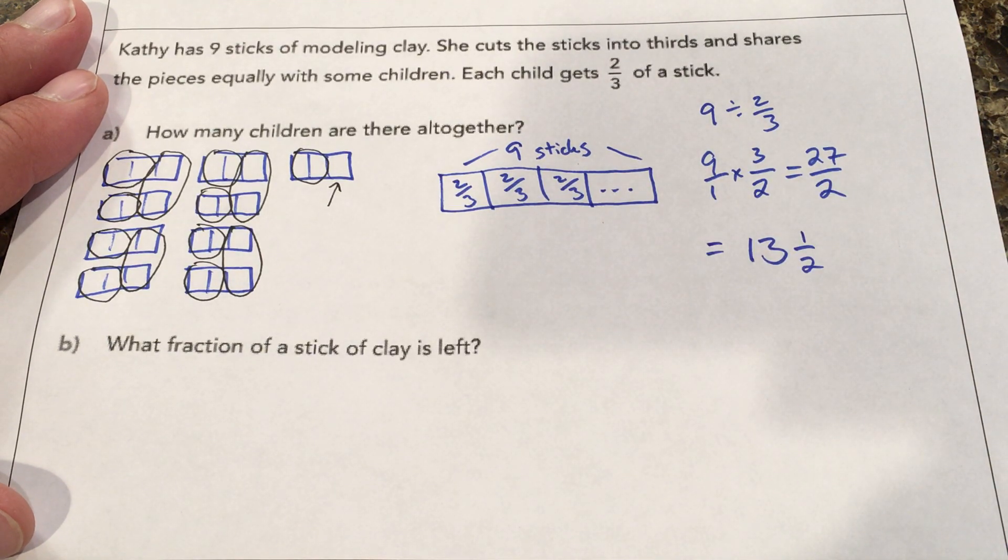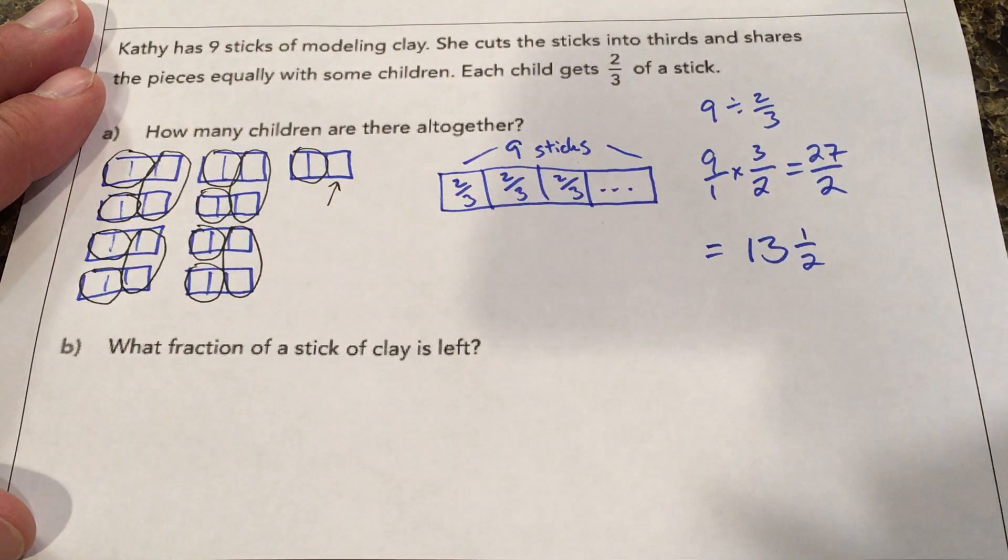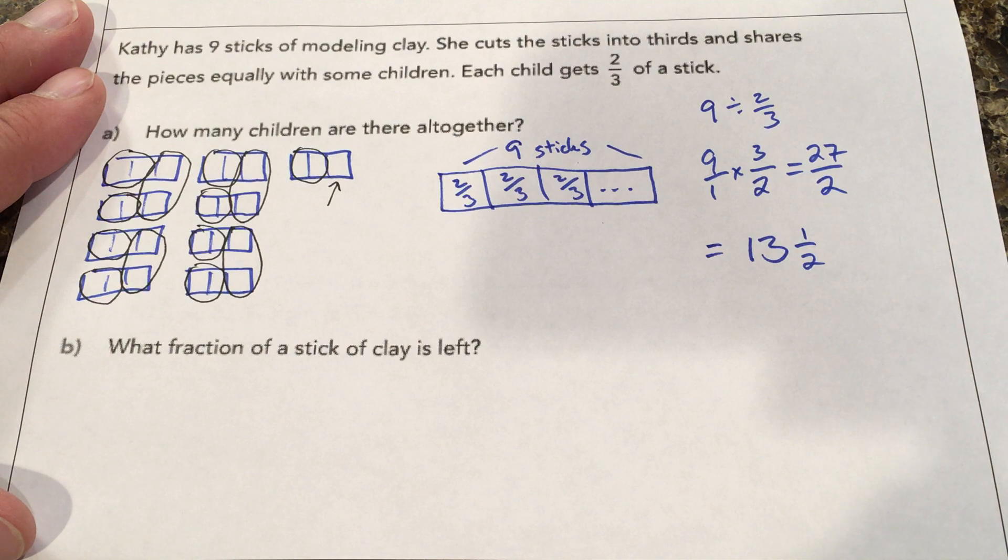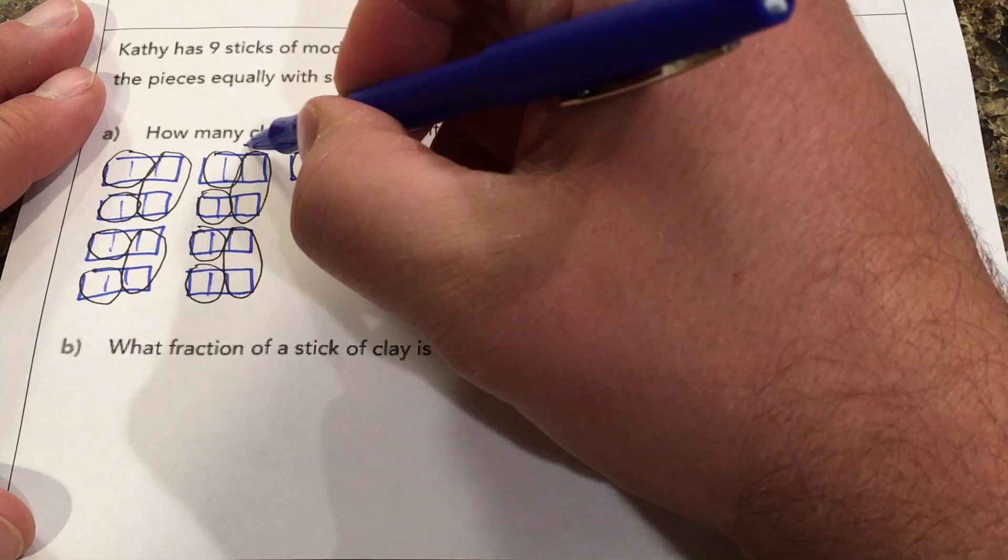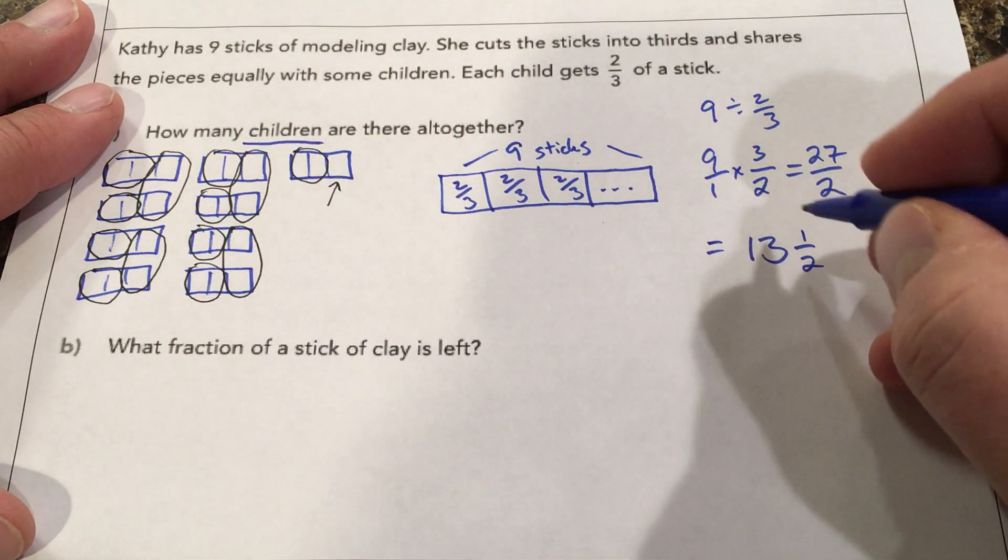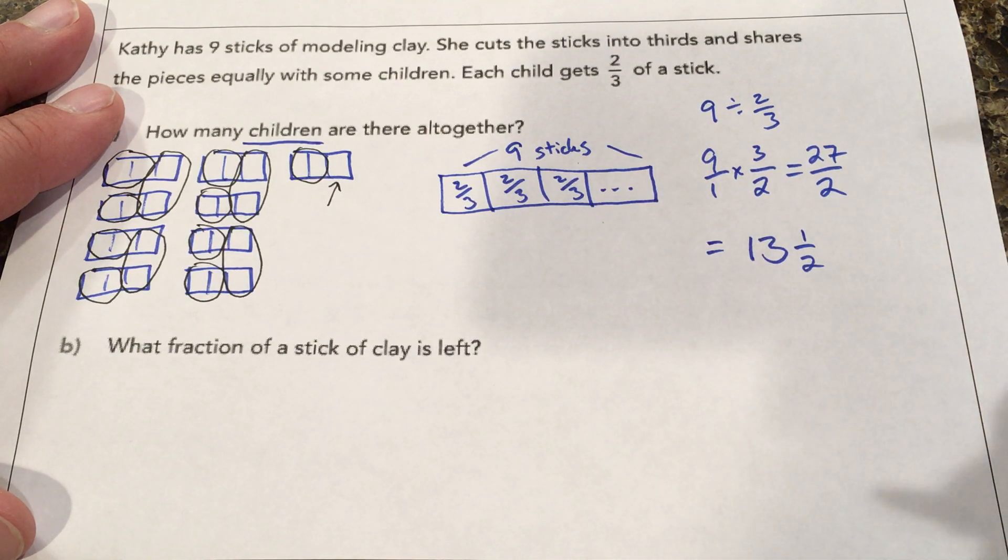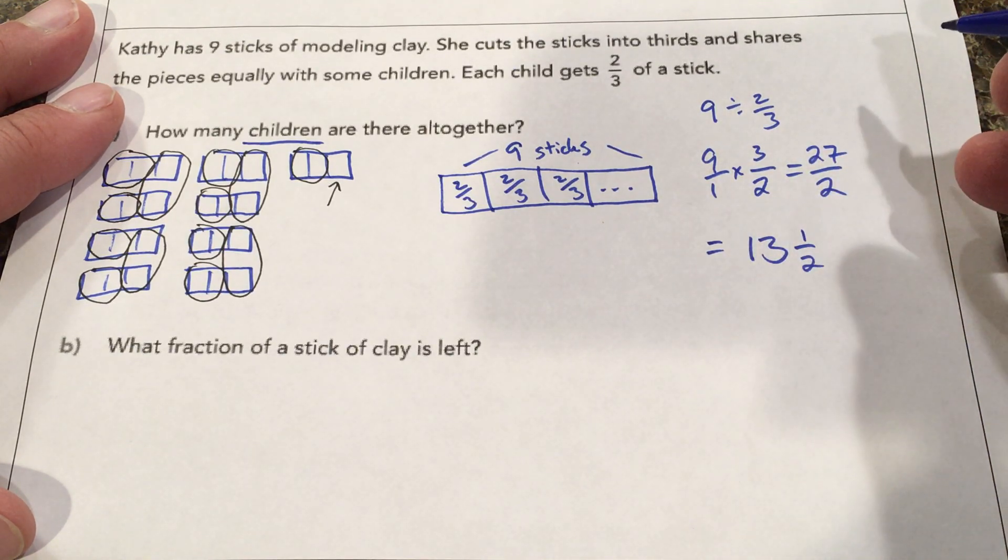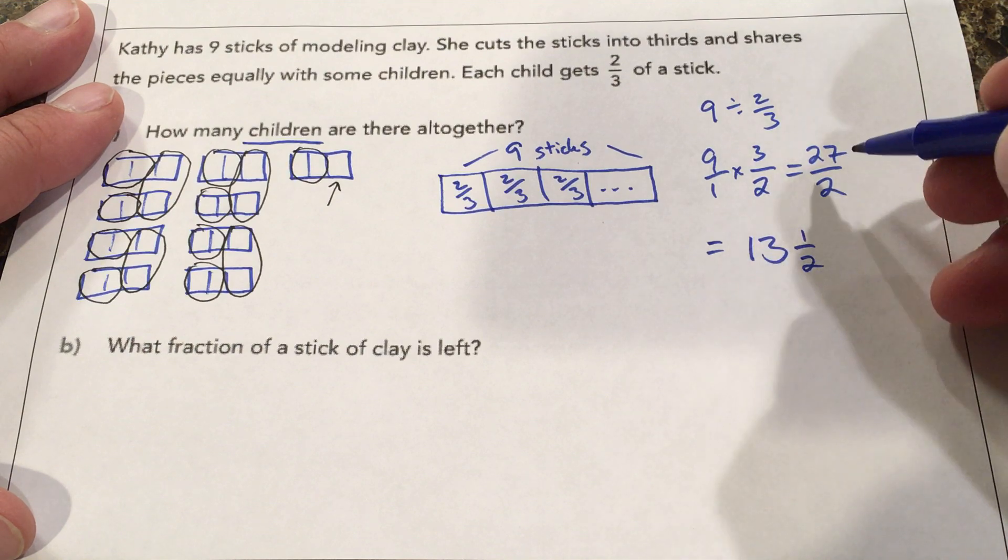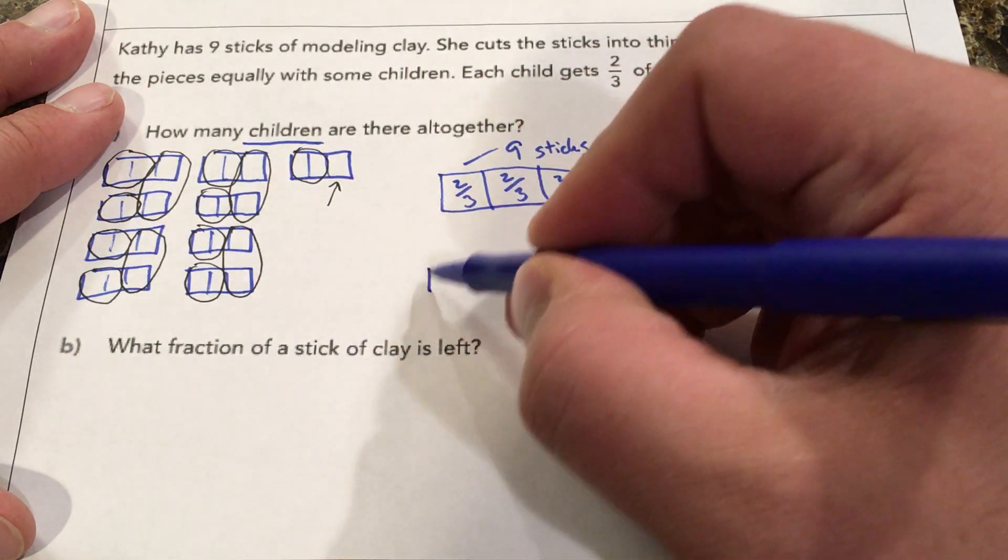Now we have to think about the context of this question. If each child gets two-thirds of a stick and our answer is 13 and a half and the question is how many children are there? We can't have half of a children, no such thing. So this is a case where it wouldn't make sense to round up because we don't have enough for a 14th kid. So there are 13 children.